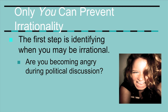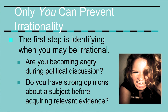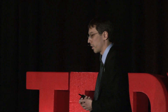Here are some signs that you might be irrational. The first is if you're becoming angry during political discussion — not if someone is insulting you, but if another person is advancing a political position and arguing for it and that makes you angry. That is a sign you have biases that might be preventing you from thinking objectively. The second sign is if you have strong opinions about a subject before acquiring relevant empirical evidence. Most political issues have an academic literature, studies, and statistics. If you haven't looked into any of that literature but you have an opinion, it's probably irrational.